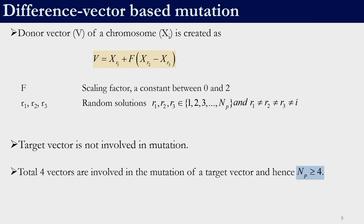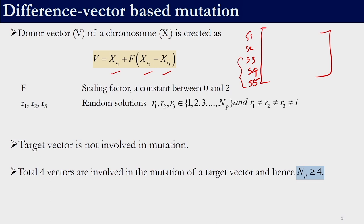The mutation operator is a very simple operation. We need to select 3 random solutions from the population — they should not be identical. For example, if we select S3, S4, S5, we apply the equation: donor = S_r1 + F*(S_r2 - S_r3), where F is a user-defined scaling factor usually between 0 and 2. That gives us the donor vector. Note that the target vector itself does not participate in mutation.